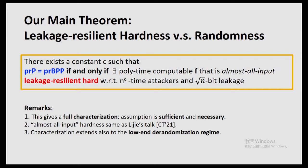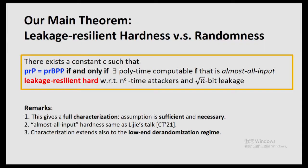Q: Is the leakage from the input? A: No, it's square root of n bits of the input that are revealed. It's leakage from the output of the hard function — so it's square root of n bits from F(x).